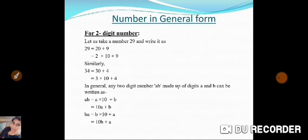Let us start with the first topic: numbers in general form. We will study two-digit numbers and three-digit numbers. Starting with two-digit numbers, I'm going to explain the general form with examples. For the first example, 29 can be written as 20 plus 9. Then 20 can be written as 2 x 10, so 29 equals 2 x 10 plus 9. Similarly, 34 can be written as 30 plus 4, and 30 as 3 x 10, so 34 equals 3 x 10 plus 4.